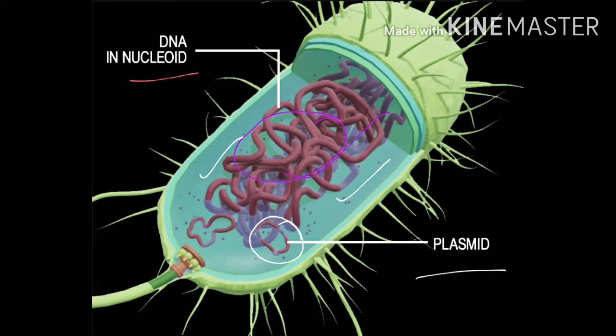Prokaryotic cells also contain extra chromosomal DNA called plasmid — this was discussed in the 11th class chapter on cells. So in prokaryotes, besides the main DNA, there is also a different chromosomal DNA which is called plasmid. Remember that plasmid is very important and we will study it in other chapters.